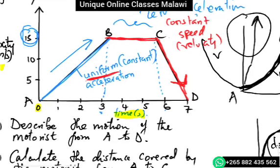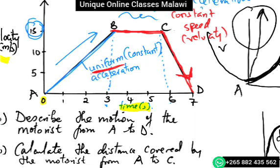Putting this together: the motorist starts from rest and accelerates uniformly until reaching speed of 15 meters per second after 3 seconds. Then he maintains that speed for the next 3 seconds. After that, he applies the brake and decelerates uniformly for another 1 second.